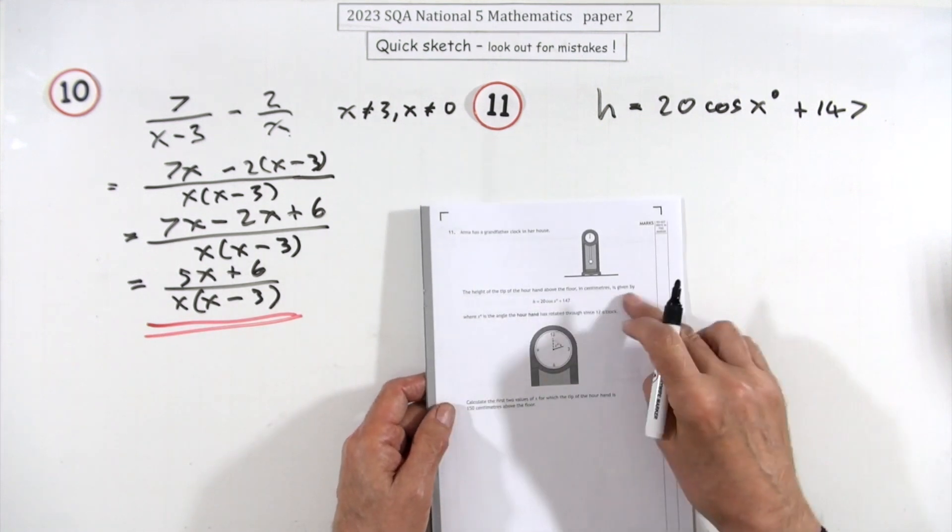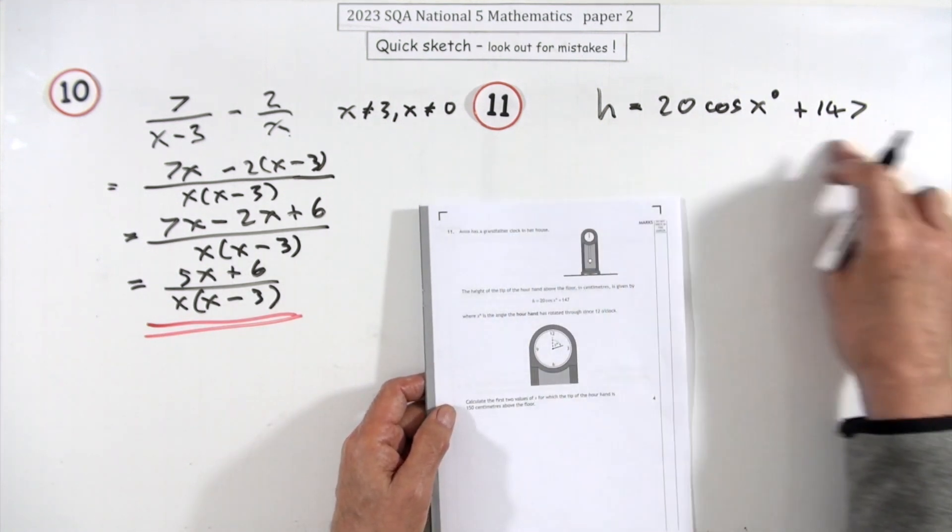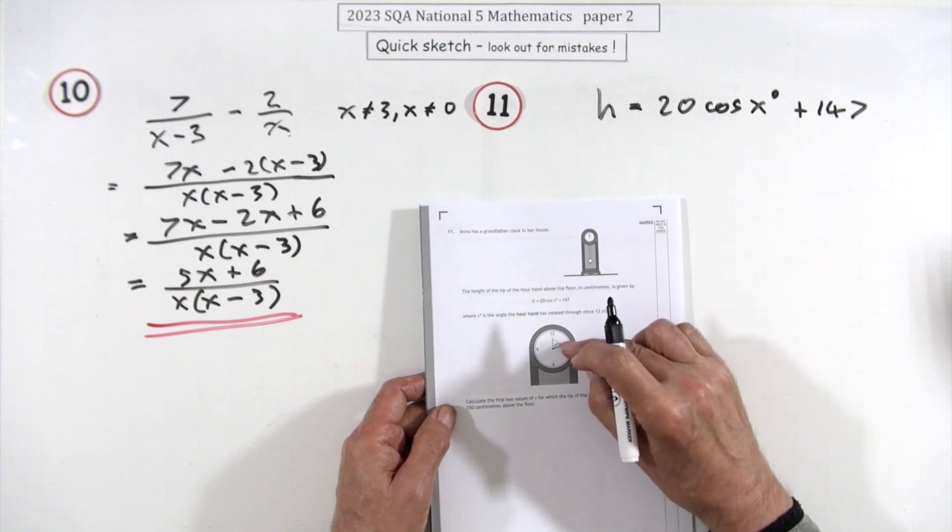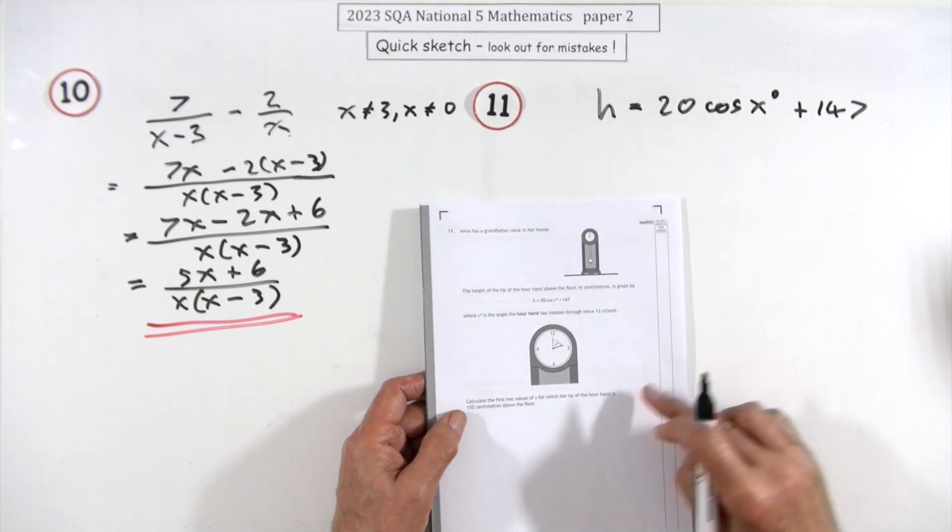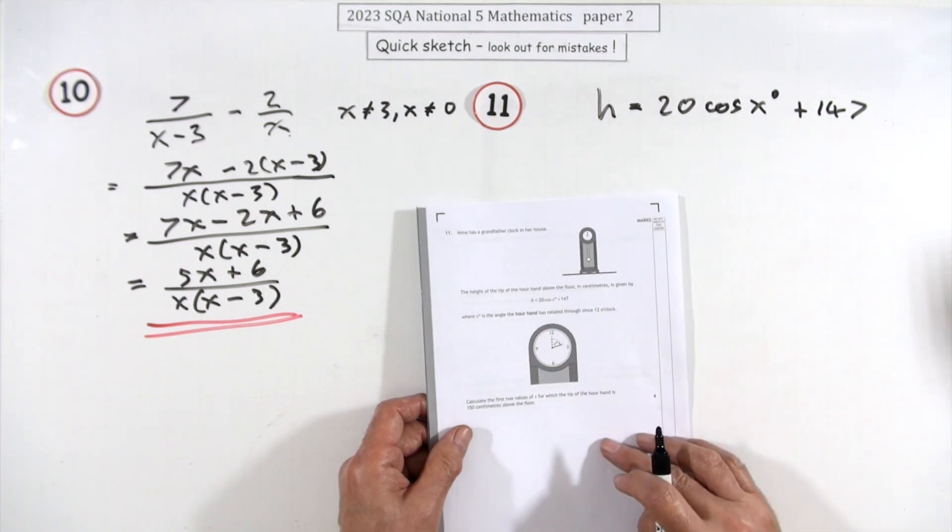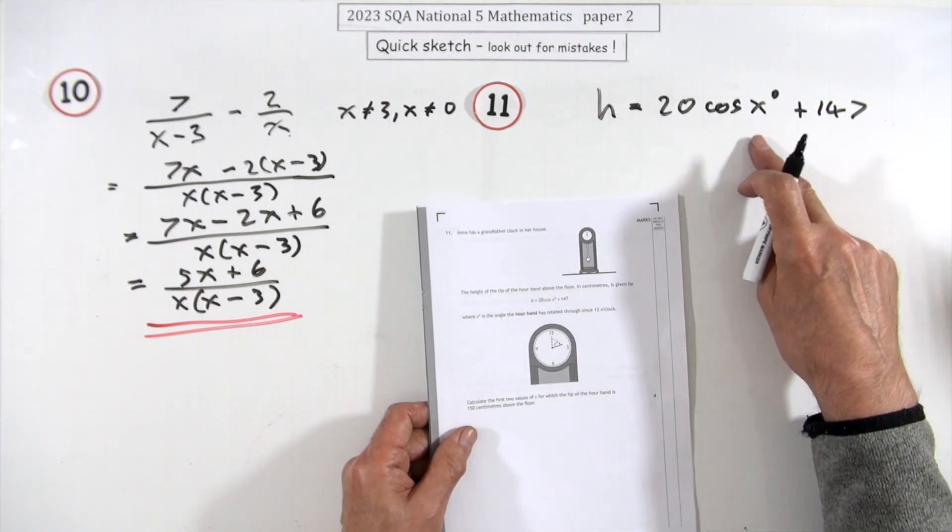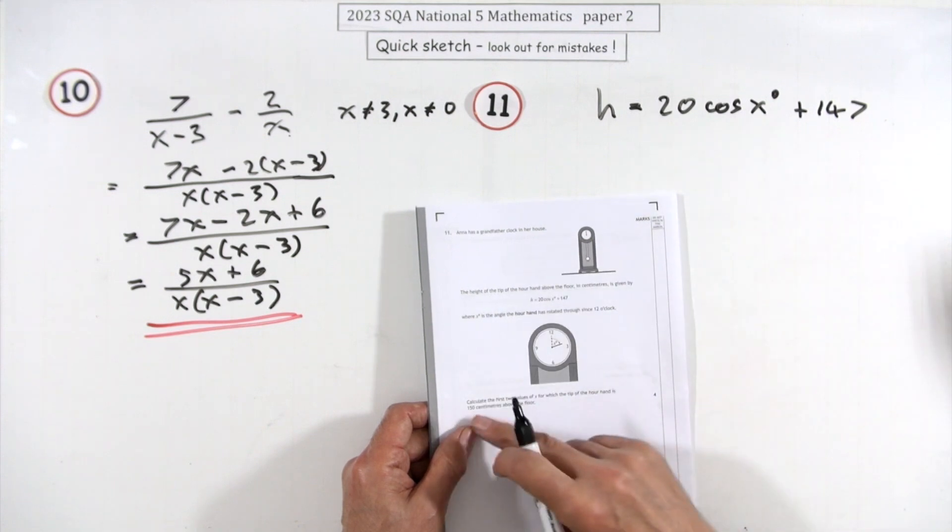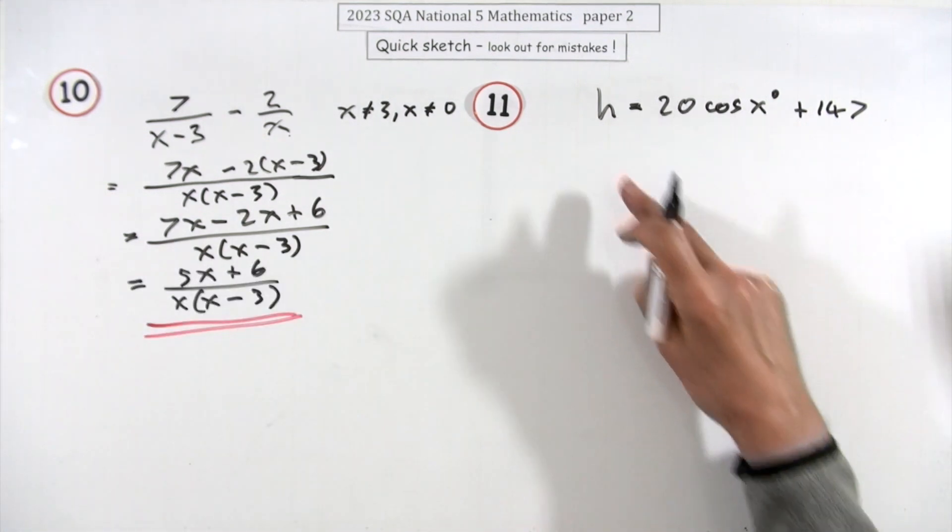Number 11, a trig equation. This equation here gives you the height of the tip of this hand as it rotates around, starting at the 12, so starting at the top, which is what the cos does. Find the first two values of x for when the tip is at 150.